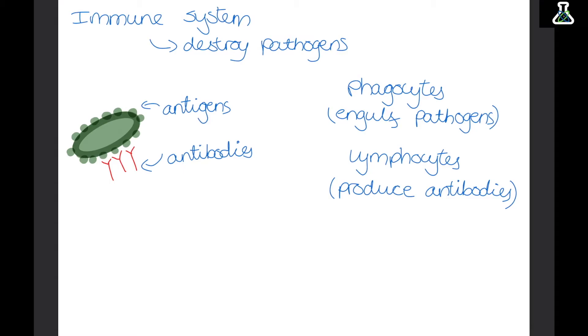So when you get a vaccine, you're given dead or weakened versions of the pathogen. Now this is to stimulate an immune response. So this means your body begins creating lymphocytes that can create antibodies for the pathogen. So if you ever do get infected, your body already has the things it needs to fight the pathogen off.